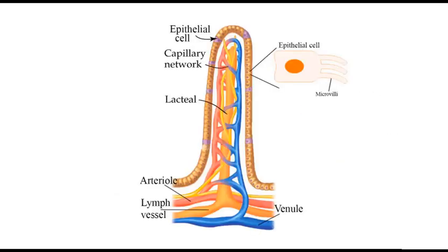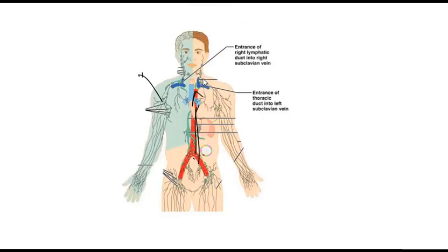From the enterocyte, chylomicron is secreted to the lymphatics by exocytosis. After traveling through the lymphatic system, they enter into the left subclavian vein by thoracic duct and right subclavian vein by right lymphatic duct.